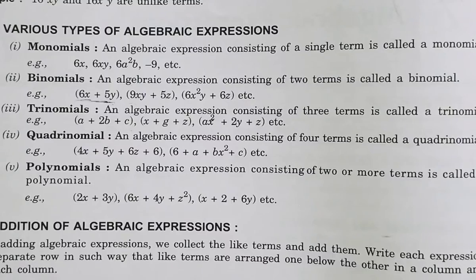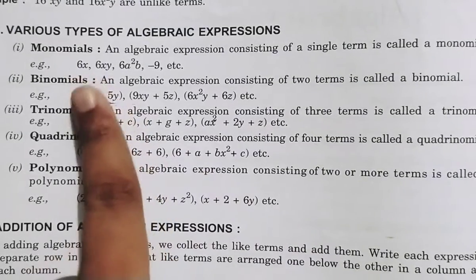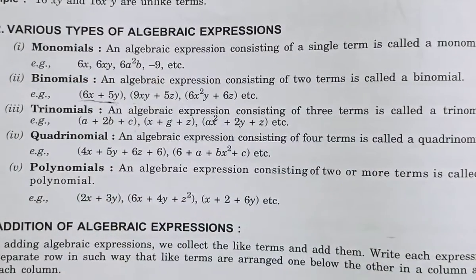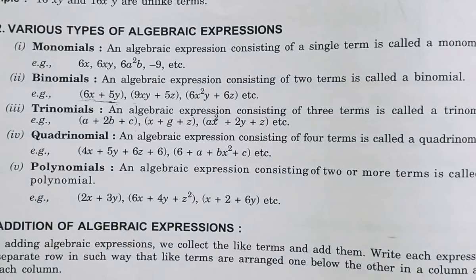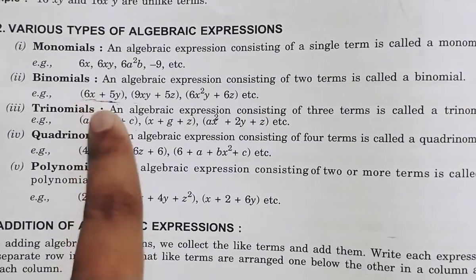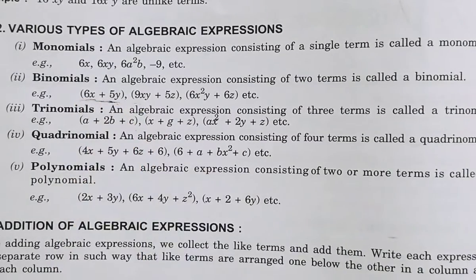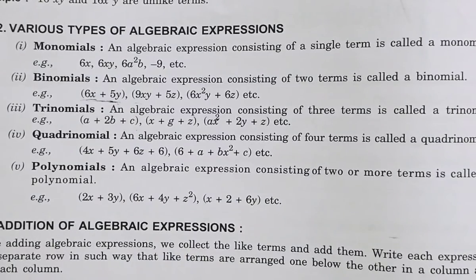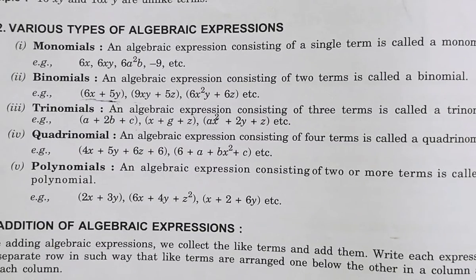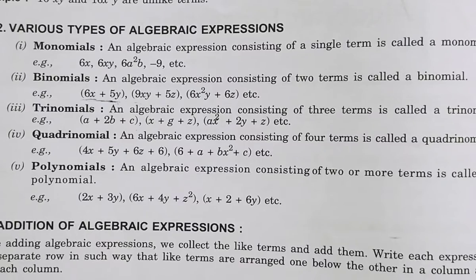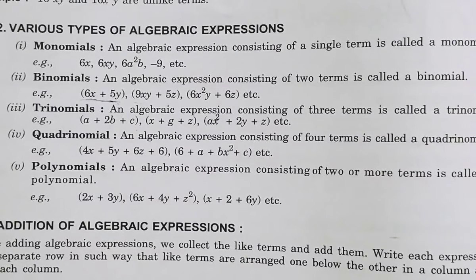In a Monomial there is one term — just like 6x, 6xy, 6a², minus 9. These are Monomials. In a Binomial there are two terms. Terms are those that are divided by plus and minus signs. For example, 6x + 5y: 6x is one term and 5y is the second term, so it is a Binomial.